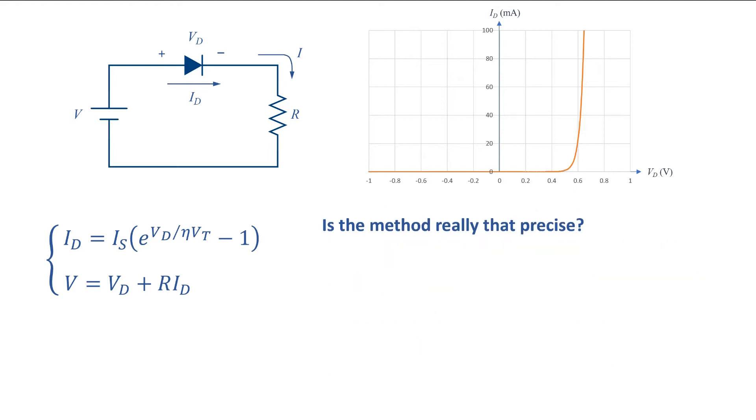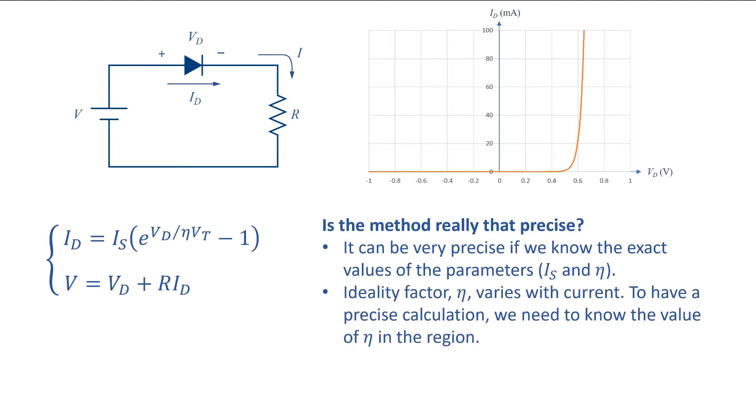Is the method really precise? It can be very precise if we know the exact values of the parameters Is and η. We know that the ideality factor η varies with current. To have a precise calculation, we need to know the value of η in the region. The method is the basis of the models in advanced simulation software.